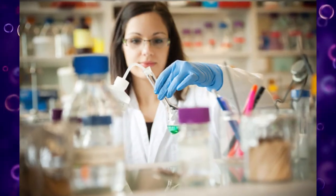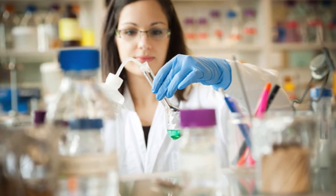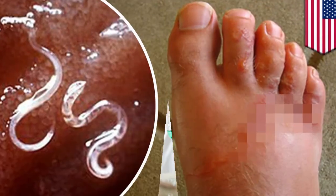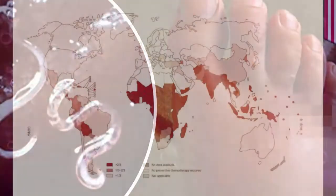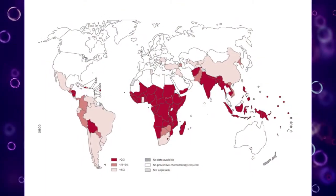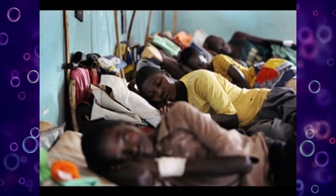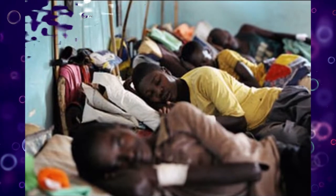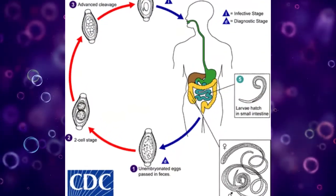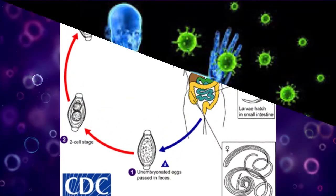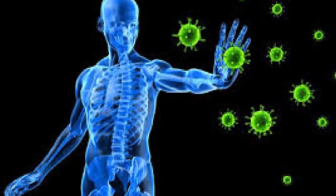Researchers in the parasitology section are interested in studying the effects of parasites upon the human population, looking at the epidemiology of parasitic diseases such as malaria and sleeping sickness, the cellular mechanisms by which the parasite infects the host and causes disease, and the reaction of the immune system to the parasite.